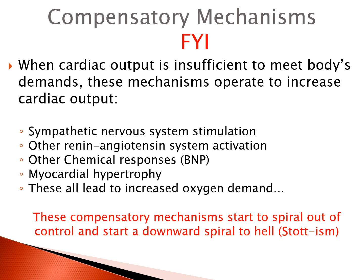Beta-type natriuretic peptide, or BNP, is a hormone released by the ventricles when they sense fluid overload — it promotes vasodilation and diuresis. Then the body senses the loss of fluid and activates all of the above systems again. All of our compensatory mechanisms start to play against each other: some systems cause the body to hold fluid, some cause the body to excrete excess fluid, and these measures start to spiral out of control.